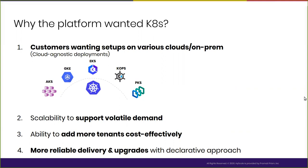Kubernetes became a natural choice because you can set up your application and deploy in exactly the same way everywhere. There were a couple of other reasons: they would get user demand with some level of volatility — sometimes more users using the platform than at other times. They also wanted to make things more economical. Finally, the declarative approach and the immutability of containers were particularly attractive to make everything more reliable than it was before.